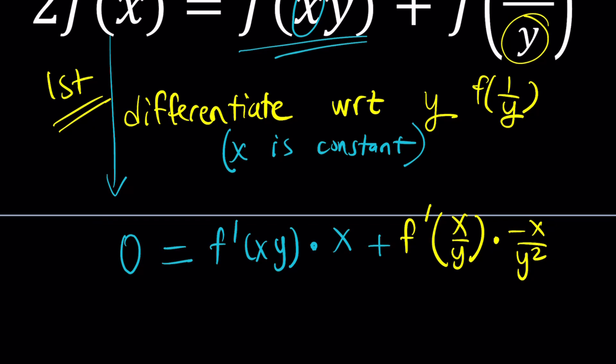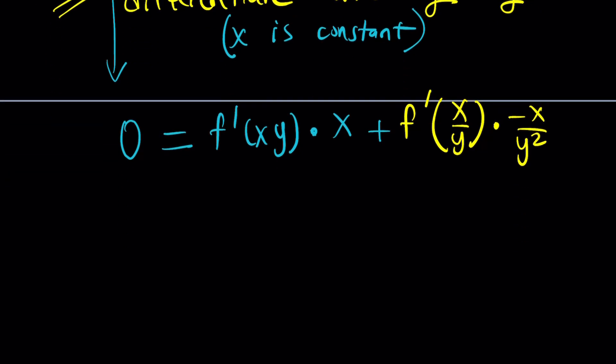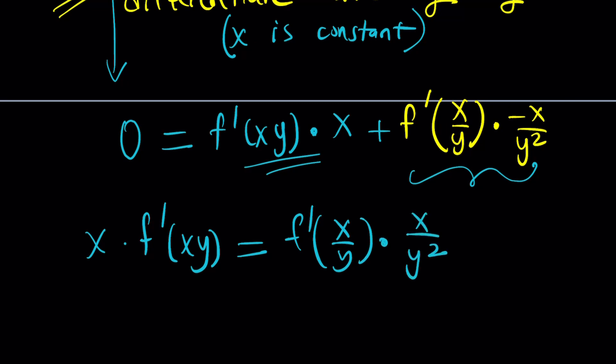If you don't like this shortcut, feel free to write x/y as x times y to the power of -1. Remember, x is a constant, so you can leave it alone and just differentiate y to the power of -1, which is -1/y². Now, we have a negative term here and a positive term, and their sum is 0. So let's go ahead and put the negative term on the other side. So x·f'(xy) = f'(x/y)·(x/y²).